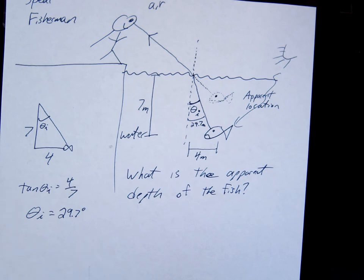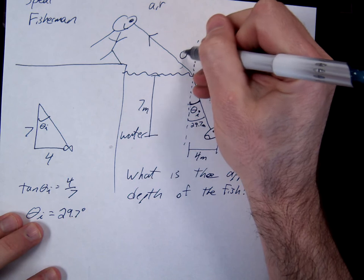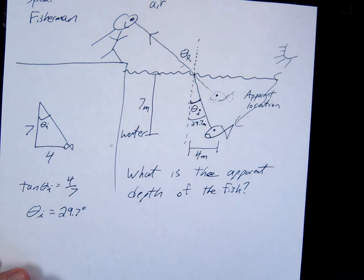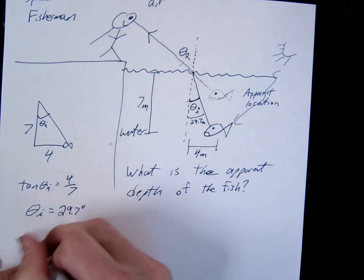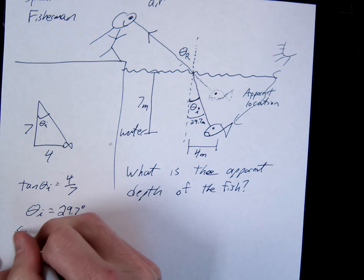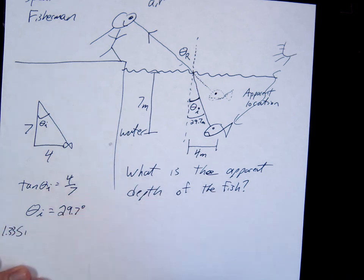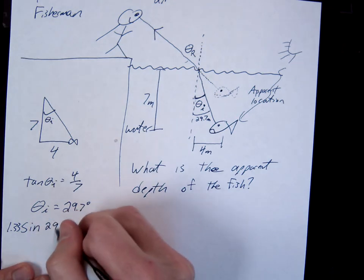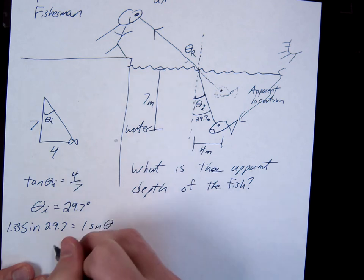Okay, now we can do Snell's Law. So we're going to do Snell's Law to find the refracted angle out here. So we're going from water, right? 1.33 sine of 29.7 equals 1 sine of theta.